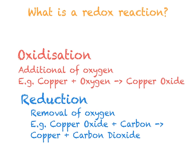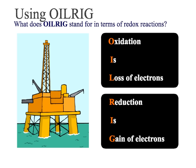We are now going to use the redox reaction in terms of electrons. When looking in terms of electrons, we can use the term OIL RIG. OIL RIG means that oxidation is the loss of electrons, whereas reduction is the gain of electrons, hence OIL RIG.